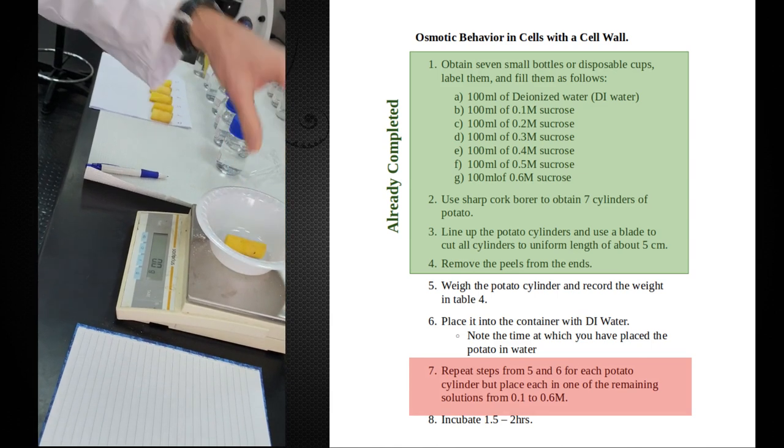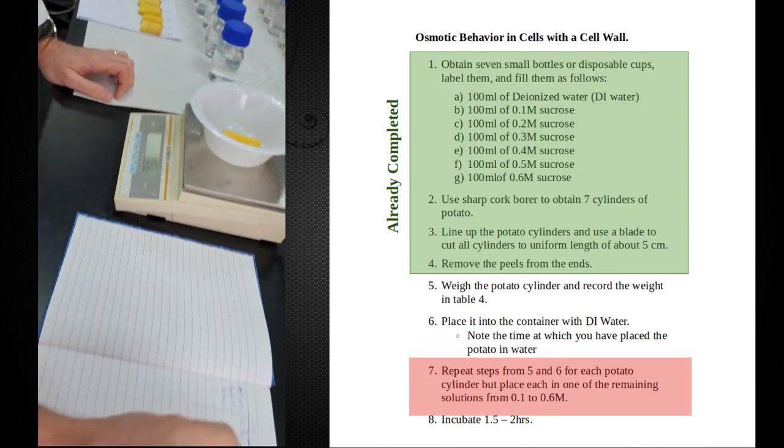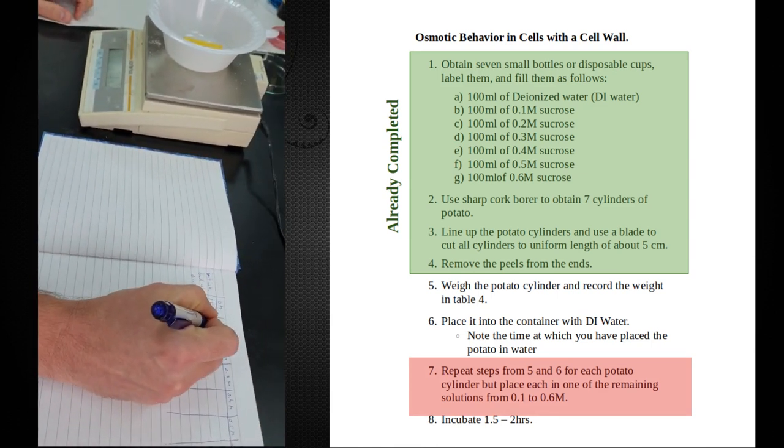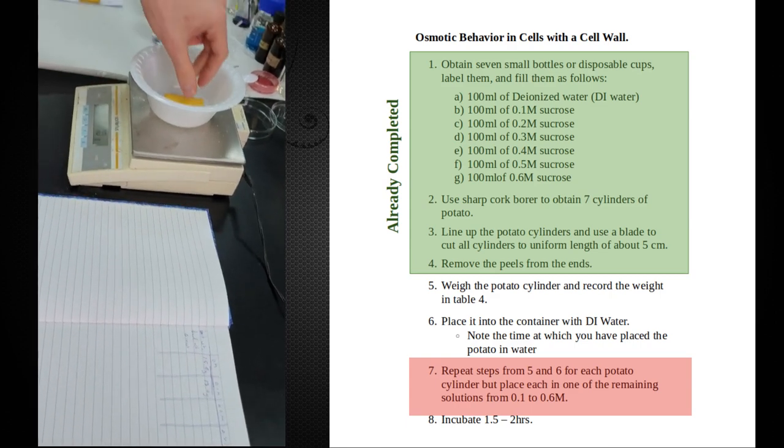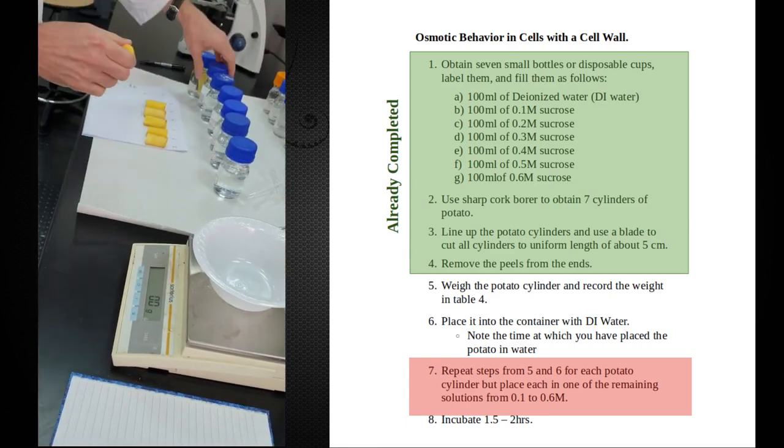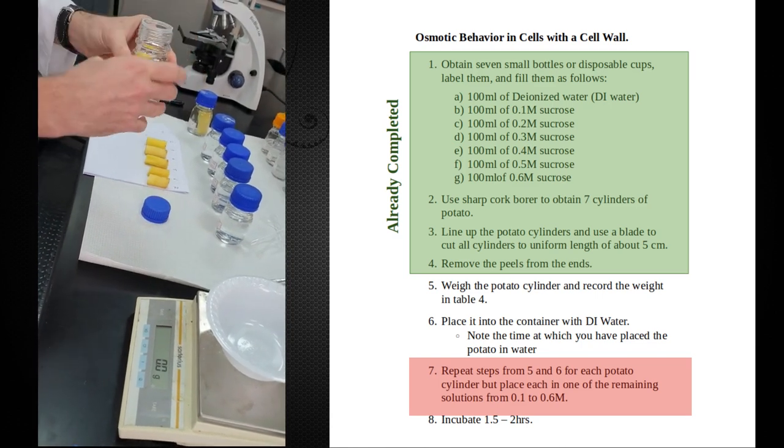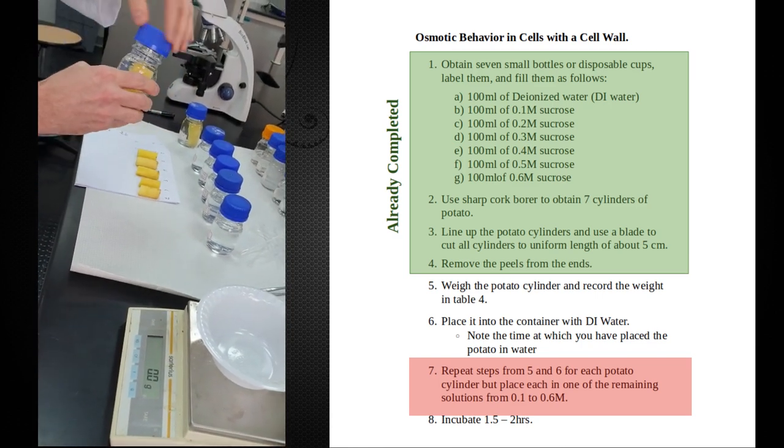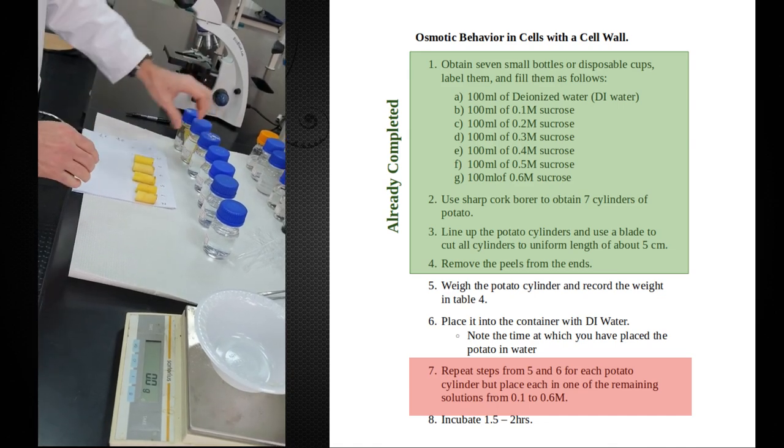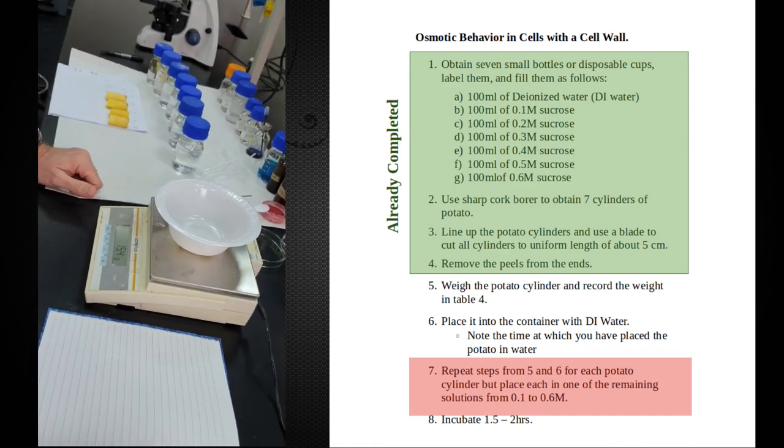Now let's take potato number two, which has 17.0 grams, and we'll place that into the second bottle. So always keep track of these things. Don't mix them up. Don't just weigh them and just leave them on a piece of paper or something. Just weigh them and put them directly into the bottles.